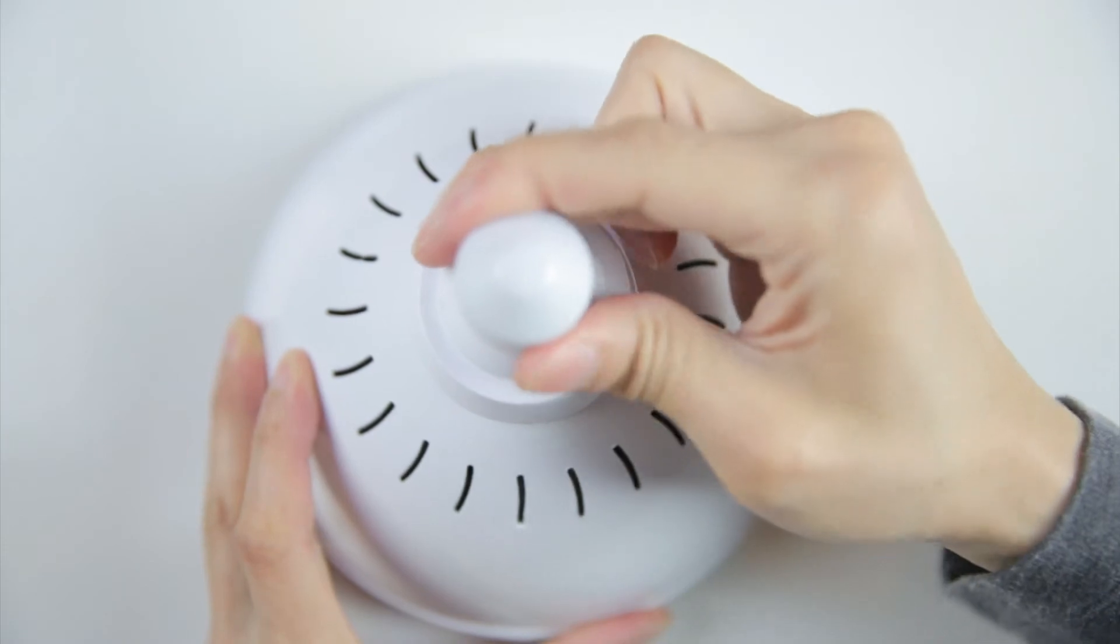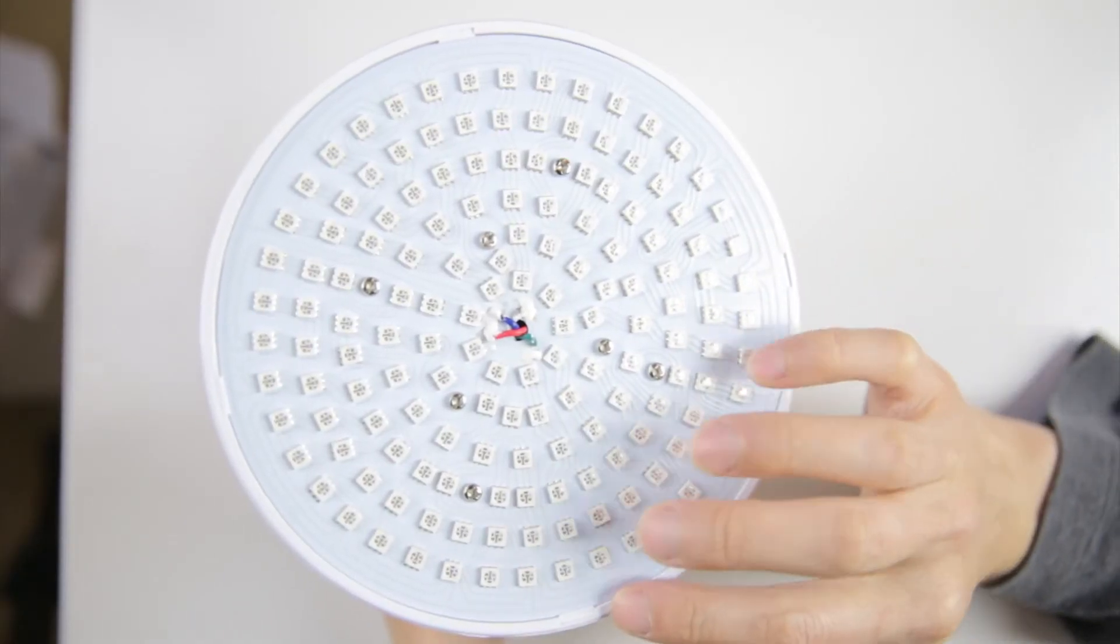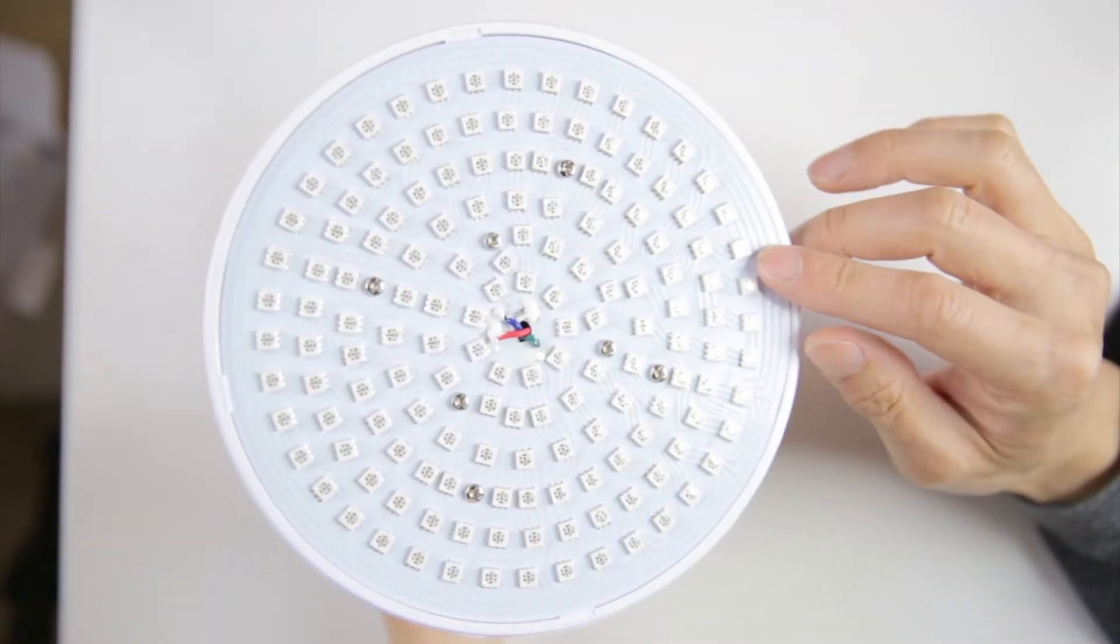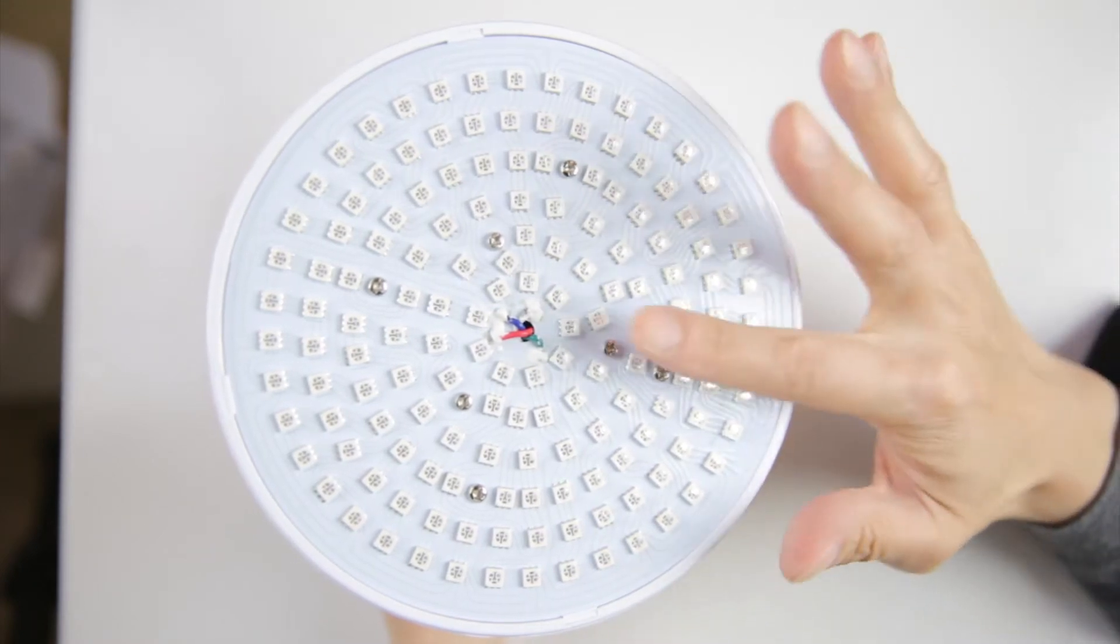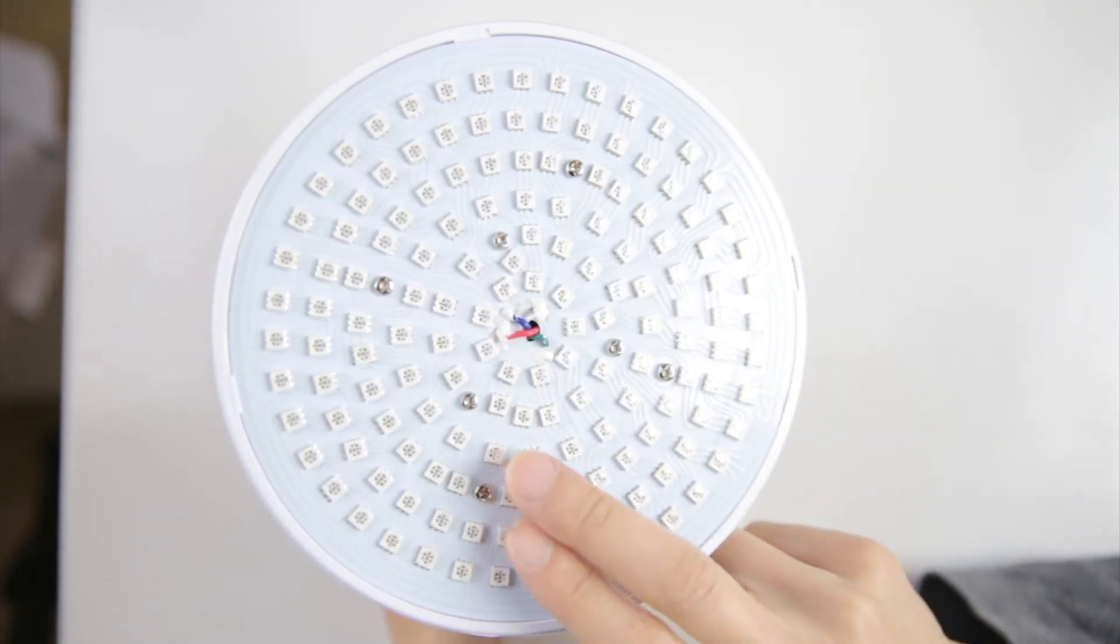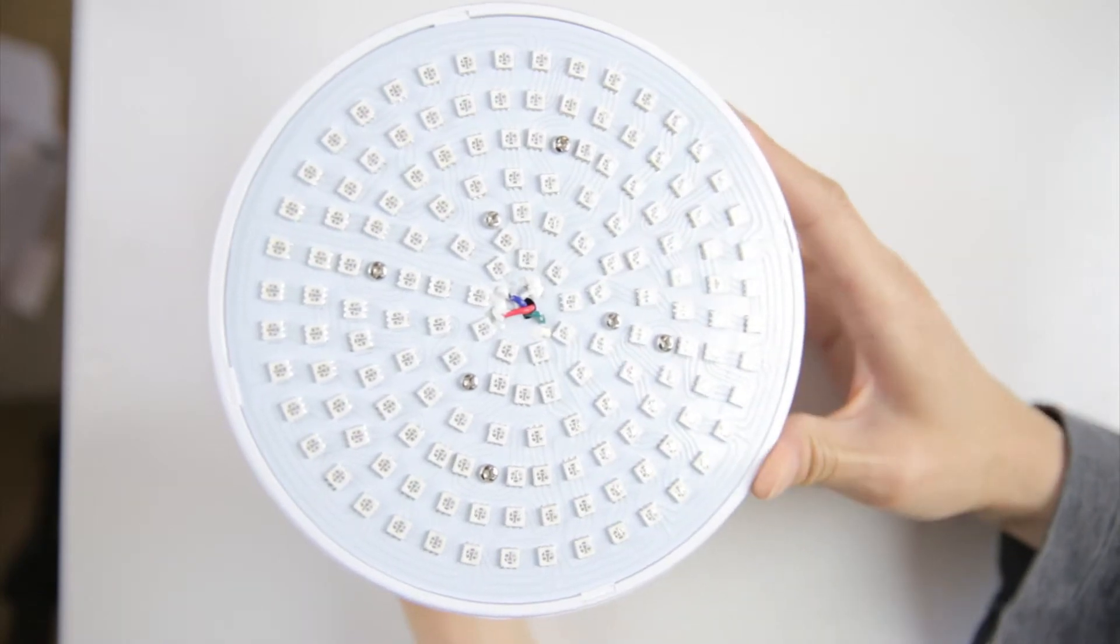There's a protective sleeve across this contact. On the business end of this light bulb, there seems to be quite a bit of RGB LEDs. Not sure if I want to count them, but... 1, 2, 5, 10... It looks to be roughly 200, I think.